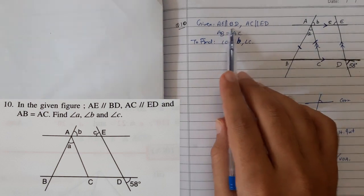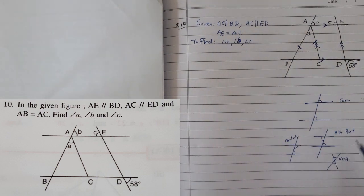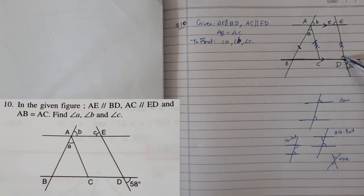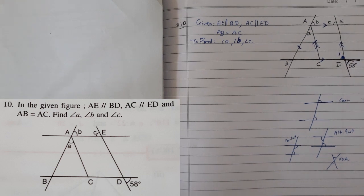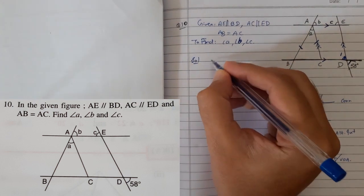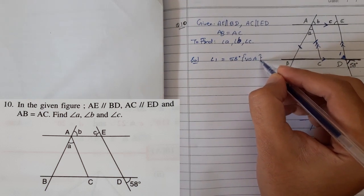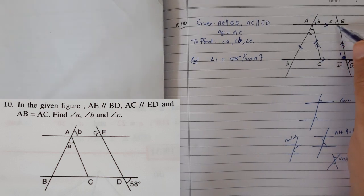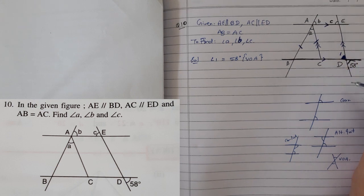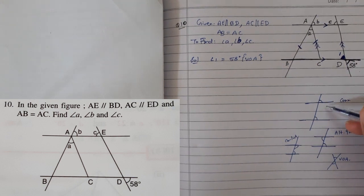First, focus on what is given and related things. Since 58 degrees is given, with the help of this I can find another angle — by vertically opposite angles. So I label it angle 1. Angle 1 equals 58 degrees by the vertically opposite angle property. Since this line is parallel to that line, angle 1 equals angle C by the corresponding angle property — on the same side of the transversal, one inside and one outside.